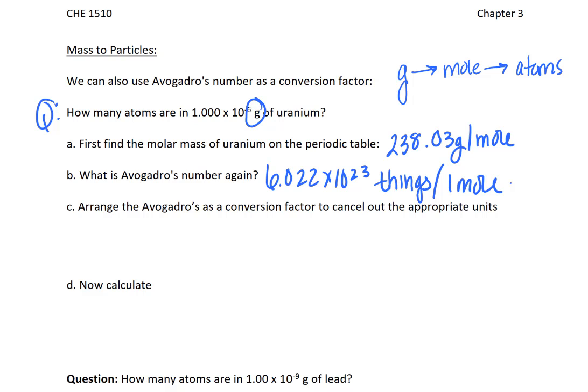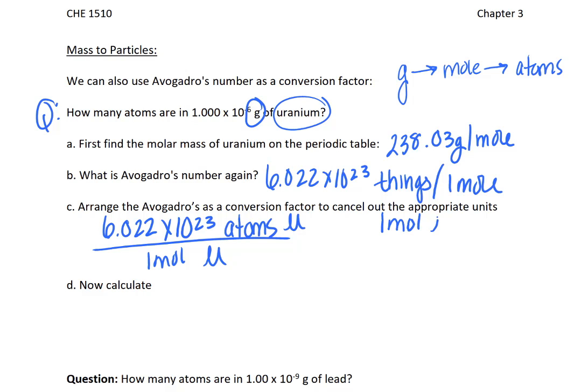And I want to show you the two ways Avogadro's number can be rearranged so that it can look very much like a conversion factor. So, first of all, let's talk about the things. In this case, because we're talking about uranium, uranium is an element on the periodic table, which means that the things that we're discussing are atoms. So, we're going to take the 6.022 times 10 to the 23rd, replace the word things with atoms of uranium and one mole of uranium. And, of course, we can flip this around and put the one mole on the top and the 6.022 times 10 to the 23rd atoms on the bottom. And we're going to use the conversion factor that cancels the units.